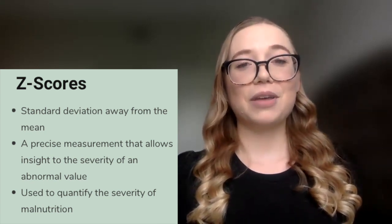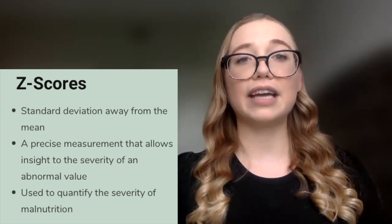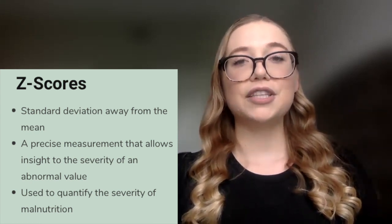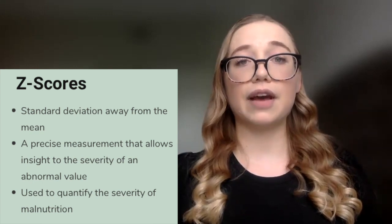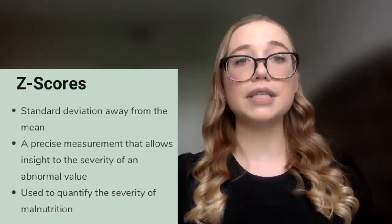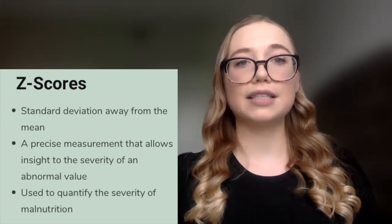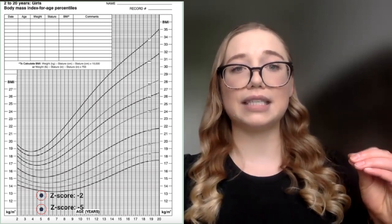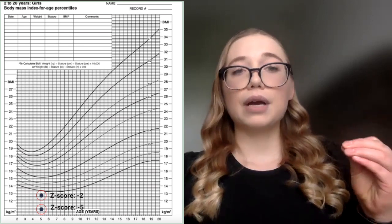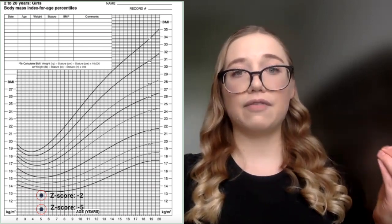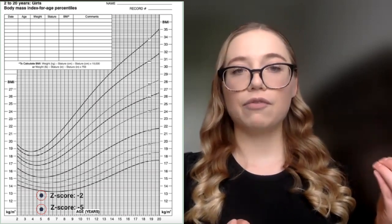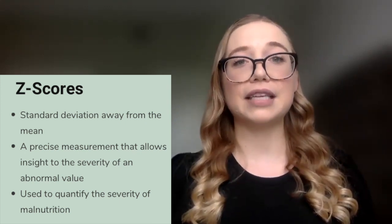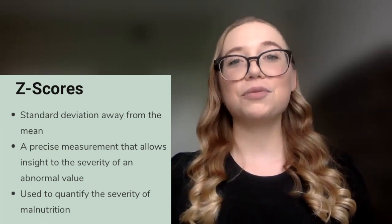That is where our Z-scores come into play. Z-scores are a little bit newer to pediatrics, and they are defined as a standard deviation away from the mean — that mean being the average at the 50th percentile. Z-scores are great for quantifying the severities of abnormalities and seeing improvements within overall weight trends. Going back to my example of those two underweight children, the one plotting very below the third percentile might have a Z-score of negative two, whereas the one that's very, very below might have a Z-score of negative five — very different severities of malnutrition. Z-scores are also utilized to diagnose and document malnutrition, which we'll talk about a little bit later.